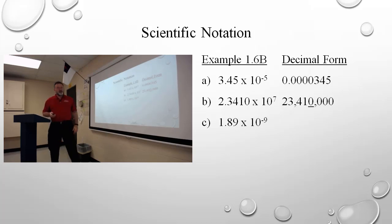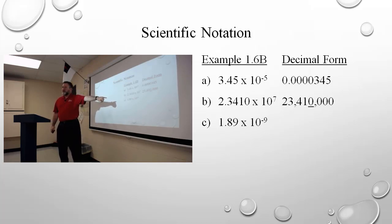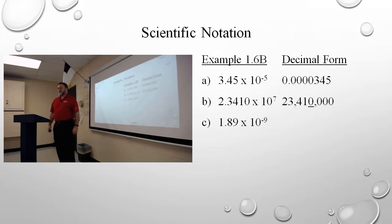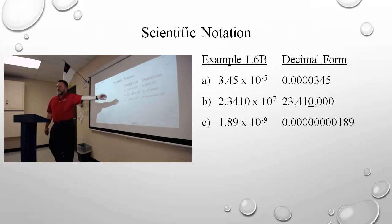1.89 times ten to the negative ninth — what am I going to do? I'm going to write 1.89 on my paper, hold a point where the decimal is indicated, then move it nine places to the left. If necessary, throw a leading zero on there to preserve the correct form.